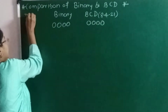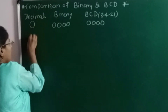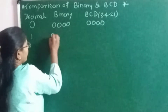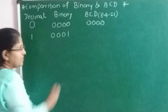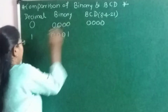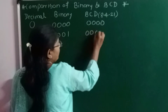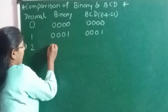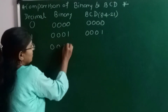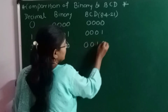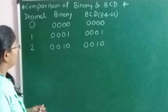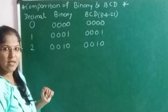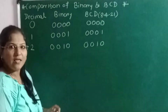Now suppose the next decimal digit is 1. The 4-bit binary equivalent for 1 is three 0s then 1 (0001). The BCD equivalent for 1 is also 0001. Next decimal is 2. Its binary equivalent is 0010 and its BCD equivalent is also 0010. So for 0, binary and BCD are the same. For 1 also binary and BCD are the same. For 2 also binary and BCD are the same.